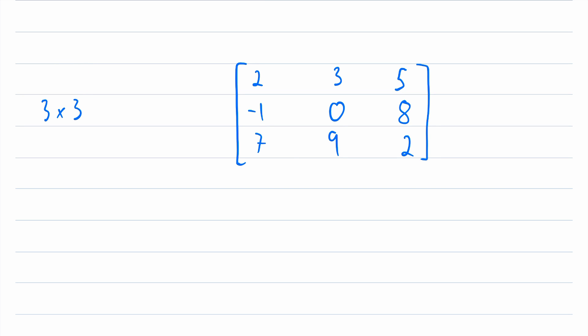Additionally, each entry in a matrix can be identified specifically by its row and column. For example, I could identify this zero entry as being in the second row and second column, or I could identify seven as being in the third row and first column.